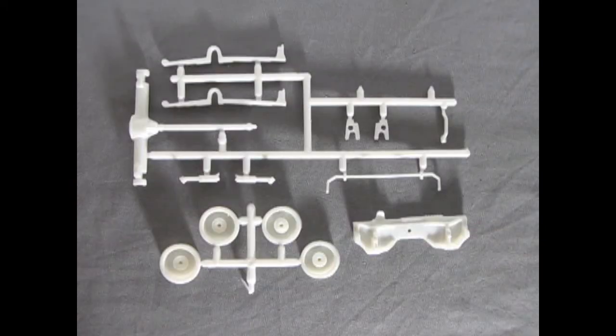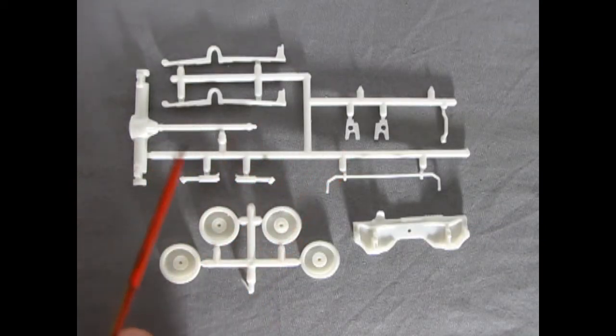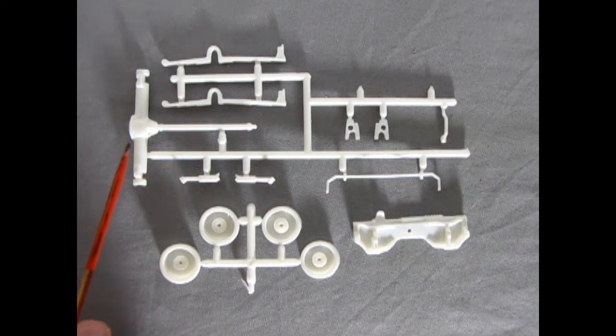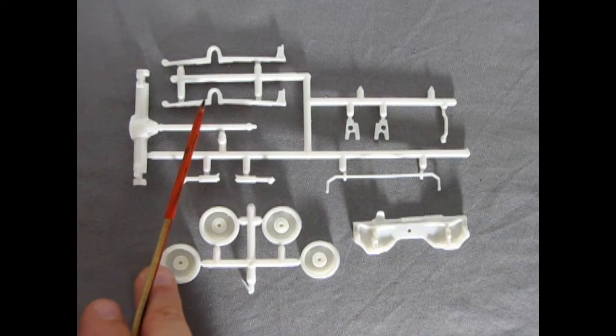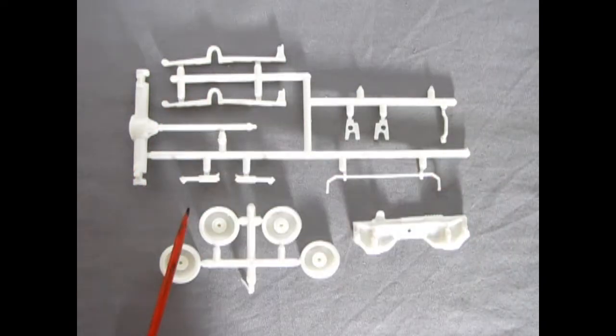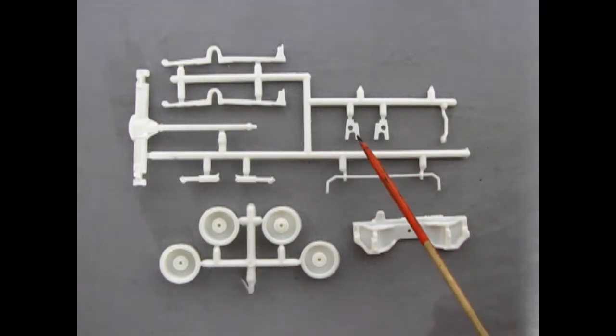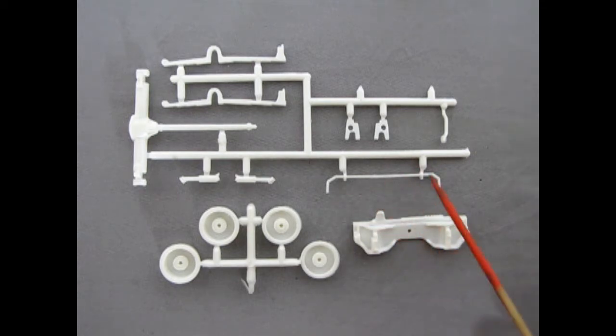Here we have our suspension components. And as you can see, there's not very many, but they are done well. We have our differential and drive shaft as one unit. Then we've got these leaf springs that actually hook onto the differential at the ends, which is nice. These shock absorbers, then here we have the blocks for our front axle, as well as one of these stabilizer bars.